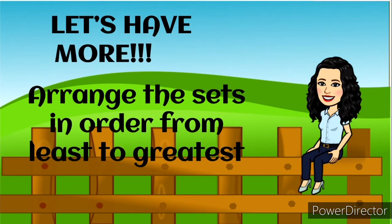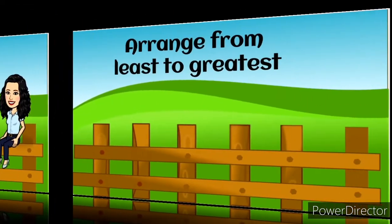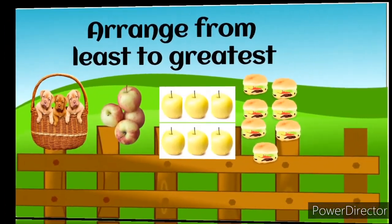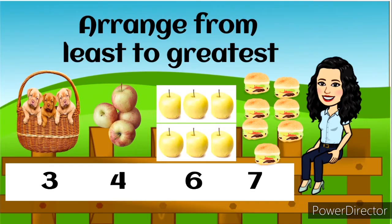Let's have more! Arrange the sets in order from least to greatest, which means small to big number. Look at the illustration. We have six peaches, three puppies, four ruffles, and seven hamburgers. Now arrange it from least to greatest. And the answer is three, four, six, seven. Very good!